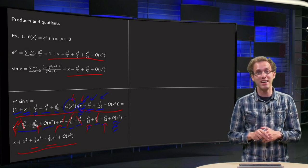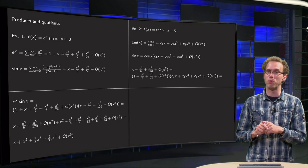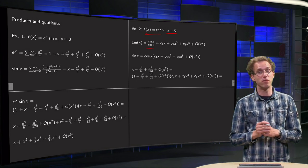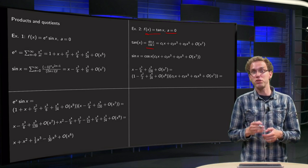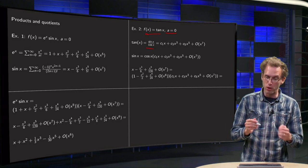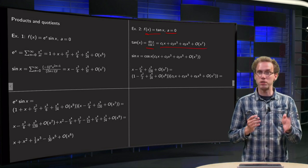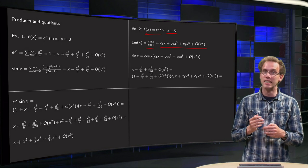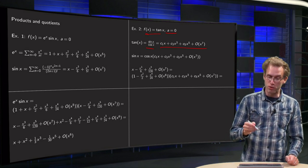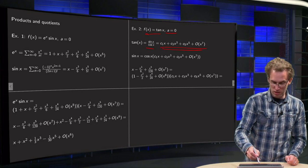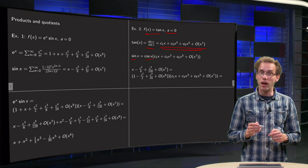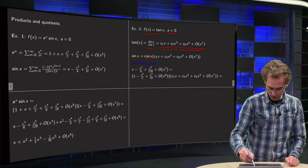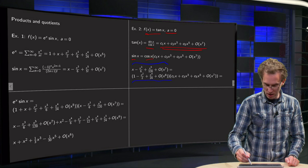Can it become even more annoying? Yes it can, if you take a quotient instead of a product — so take tangent of x around a equals 0. Tangent of x equals sine x over cosine x. It has a power series, and we know that this is an odd function, so we have only odd powers: c1 times x plus c3 times x cubed plus c5 times x to the power 5, neglecting terms of order x to the power 7 and higher. Since this equals sine x over cosine x, this power series times cosine x has to equal sine x. We know the power series of the sine and the cosine, so we plug them in — sine x on one side, cosine x on the other.